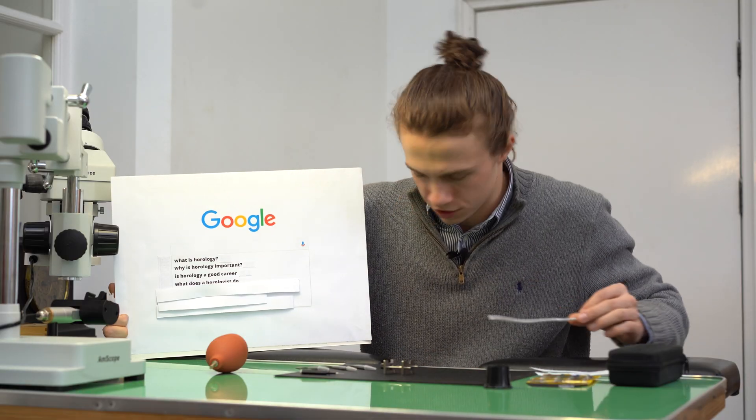What does a horologist do? A horologist does many, many things. A horologist goes from working in your local market changing batteries on a watch to restoring Big Ben. All of those are horologists.